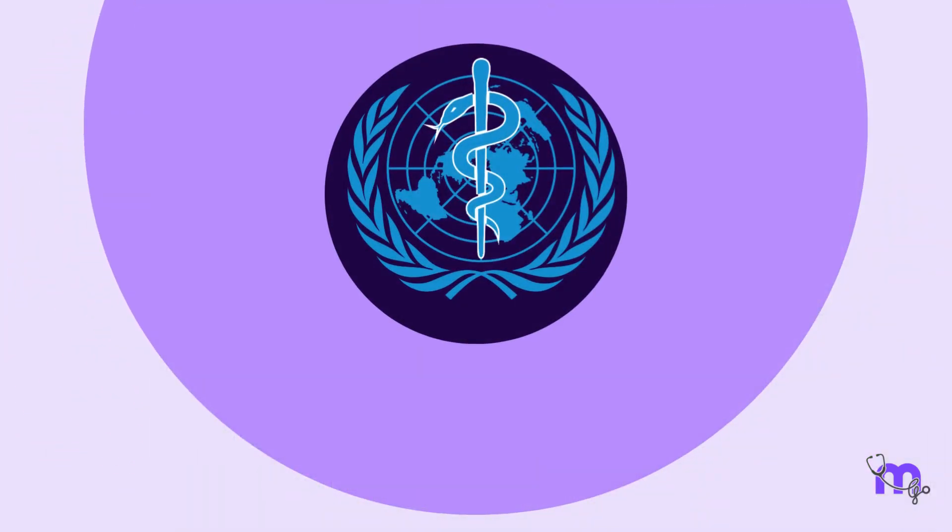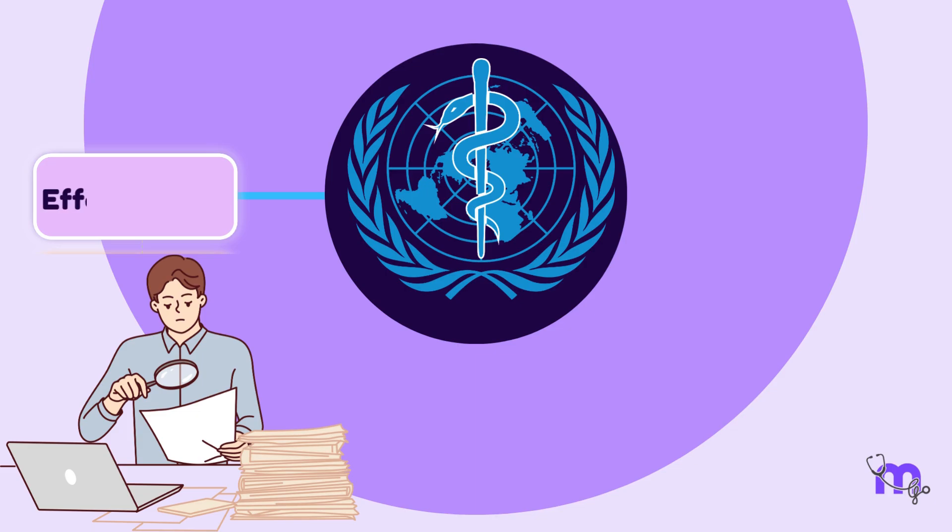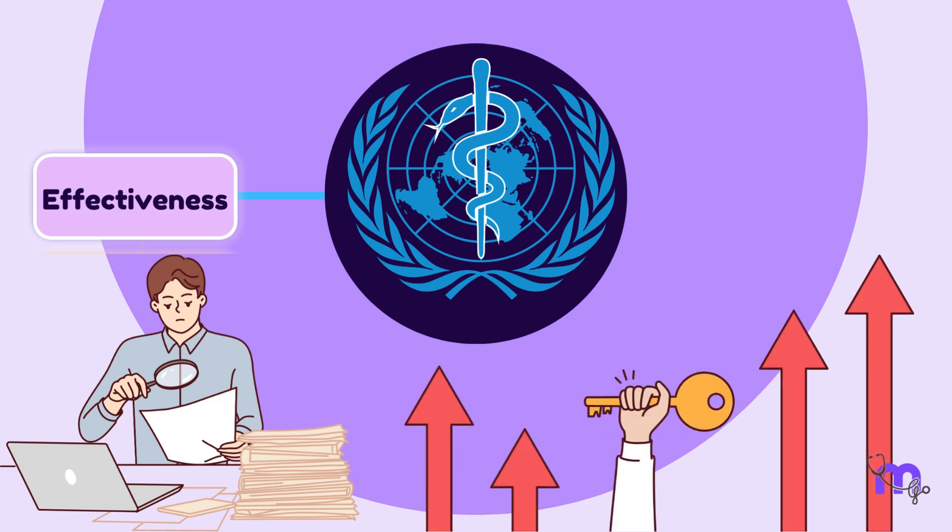The World Health Organization has specified four criteria to keep in mind while evaluating a program. The first criterion is effectiveness, which focuses on whether the program was effective enough to achieve the objectives that were set.